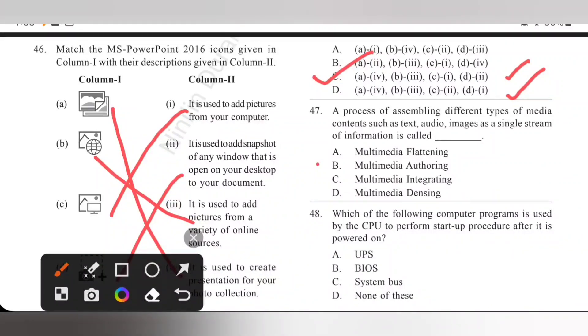Question 47: A process of assembling different types of media content such as text, audio, images as a single stream of information is called multimedia authoring. So, option B is the correct answer. Multimedia authoring.